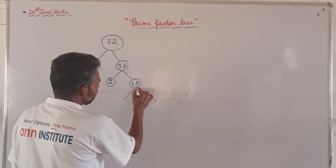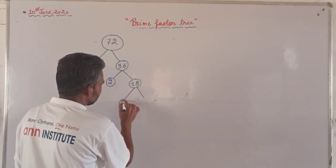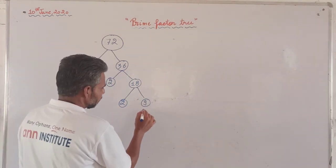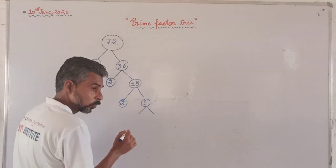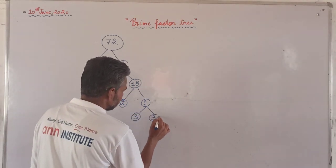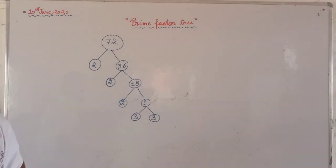Now 9 can be divided by 3, not 2. So 9 divided by 3 gives us 3. So this is the factor tree.